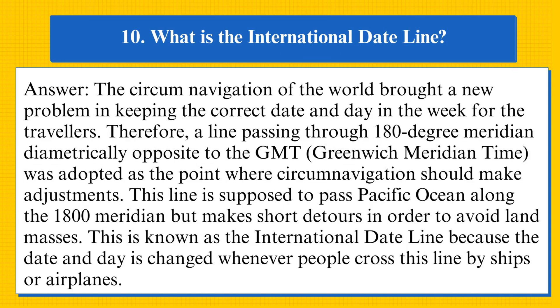The next question: what is the international date line? The circumnavigation of the world brought a new problem in keeping the correct date and day in the week for travelers. Therefore, a line passing through the 180° meridian, diametrically opposite to the GMT — Greenwich Meridian Time — was adopted as the point where circumnavigators should make adjustments. This line passes through the Pacific Ocean along the 180° meridian but makes short detours to avoid land masses. This is known as the international date line, because the date and day changes whenever people cross this line by ships or airplanes.